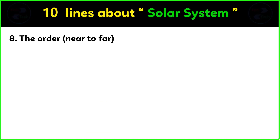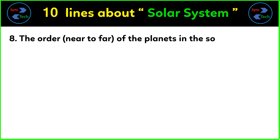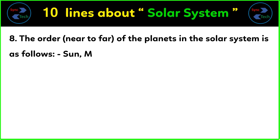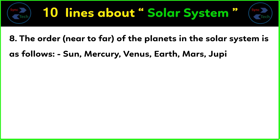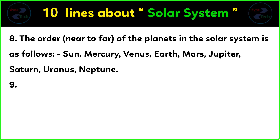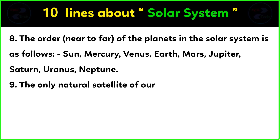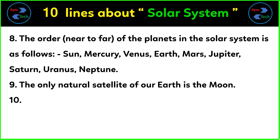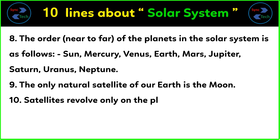The order of planets from nearest to farthest in the solar system is: Sun, Mercury, Venus, Earth, Mars, Jupiter, Saturn, Uranus, and Neptune. The only natural satellite of the Earth is the Moon. Satellites revolve only around the planet whose satellite they are.